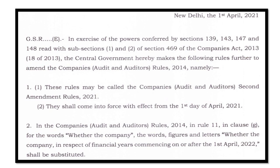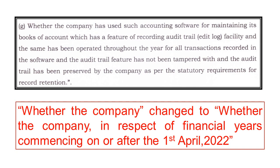I will explain further. Rule 11 clause G, which I discussed in the last video, had all these things inserted into the Matters in the Auditor's Report. It was inserted to clearly require that whether the company has used such accounting software for maintaining the books of accounts, and whether the audit trail has been preserved by the company as per statutory requirements for record retention. Now the change here is that in the first line, where the company is mentioned, additional words will be added: 'in respect of financial years commencing on or after 1st April 2022.'